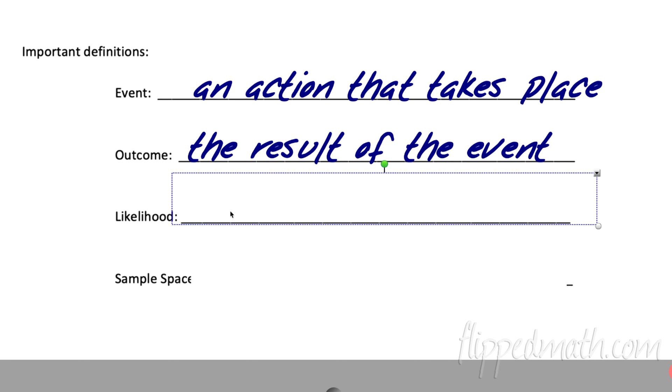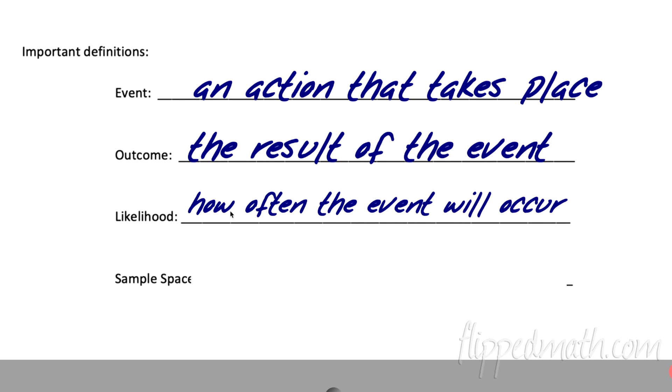Next word, likelihood. Likelihood is how often an event will occur. And lastly, the sample space. If I want to list down all possible things that can happen, then that is called the sample space. For example, if we have a coin and I toss it, there are two possible outcomes for the sample space. What can happen when you toss a coin? You can get a heads or you can get a tails. That would be the sample space because it includes everything that is possible.